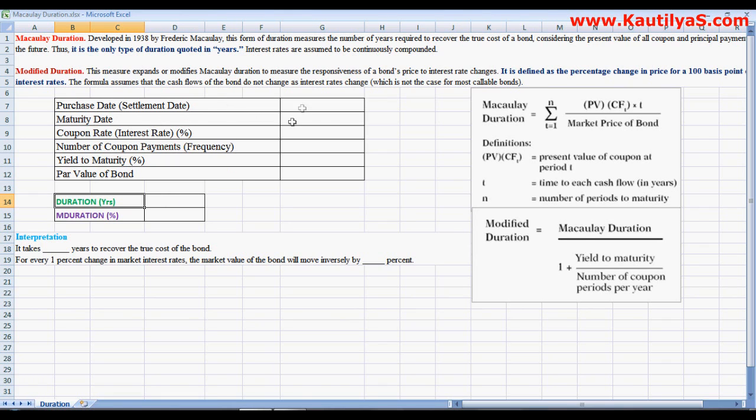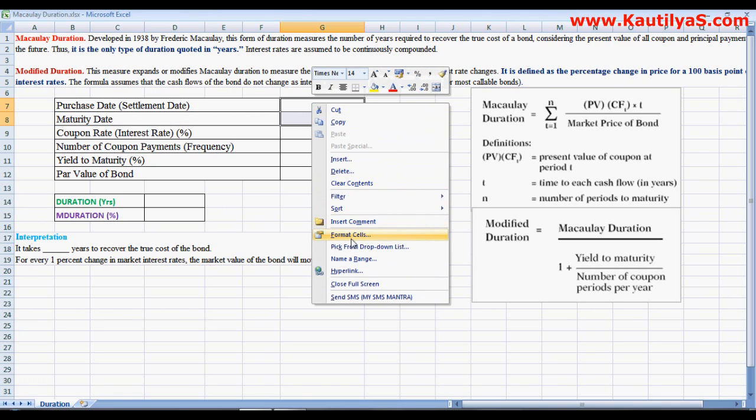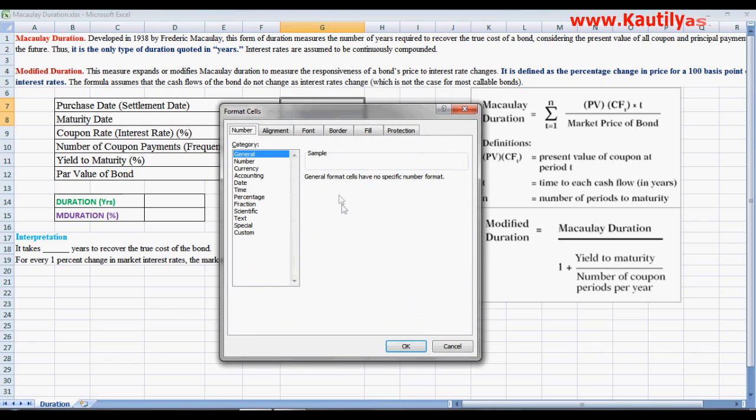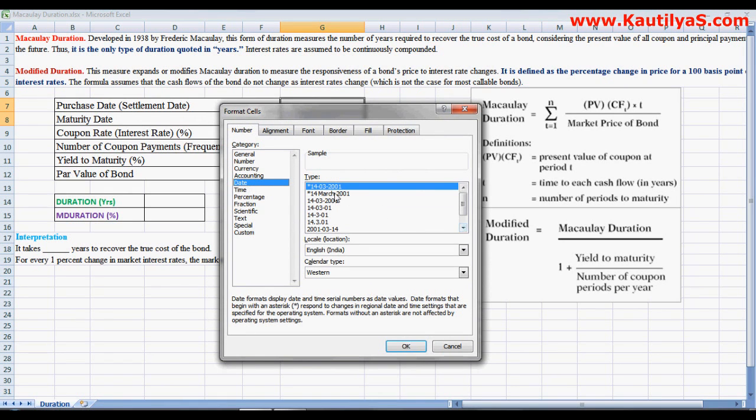These need to be the inputs which we need to give. Here you have a date as settlement date and maturity date. These two columns need to be formatted as a date, we'll take a long date.